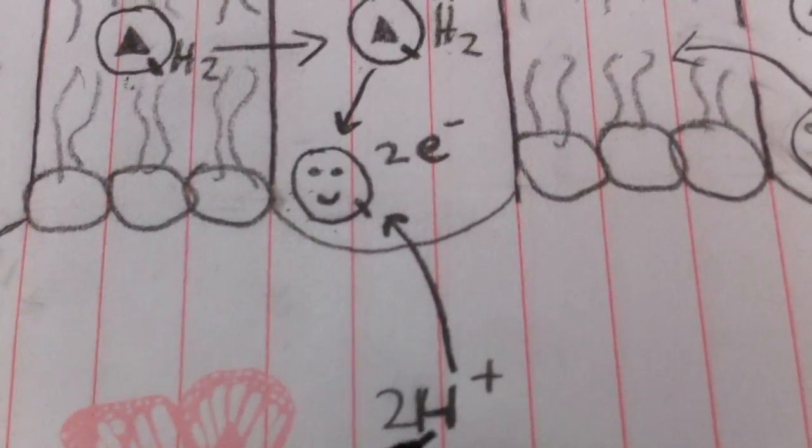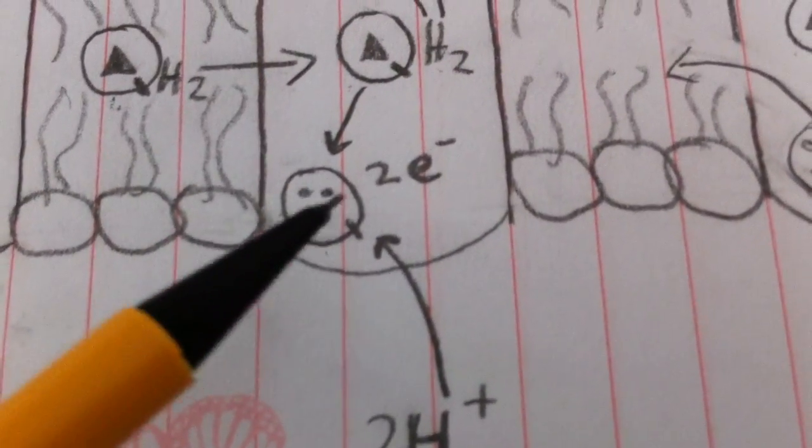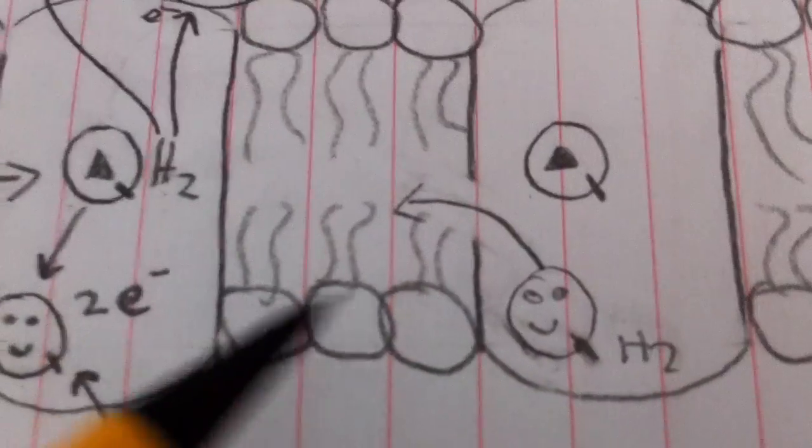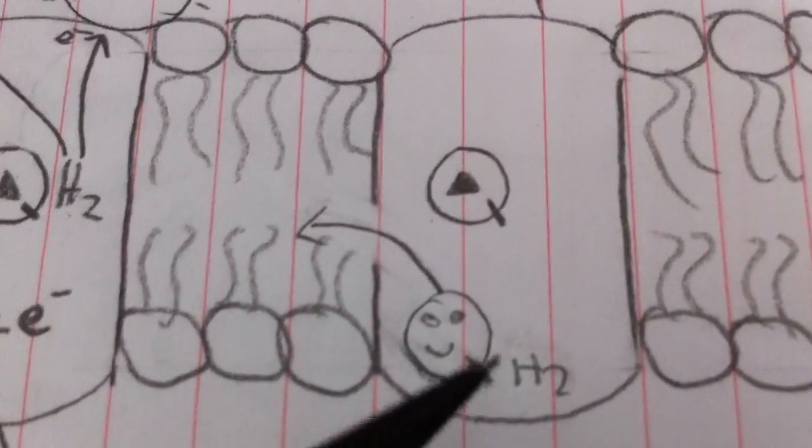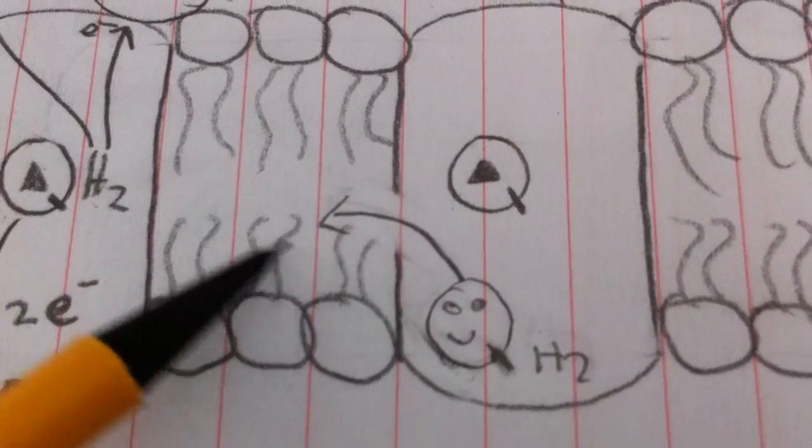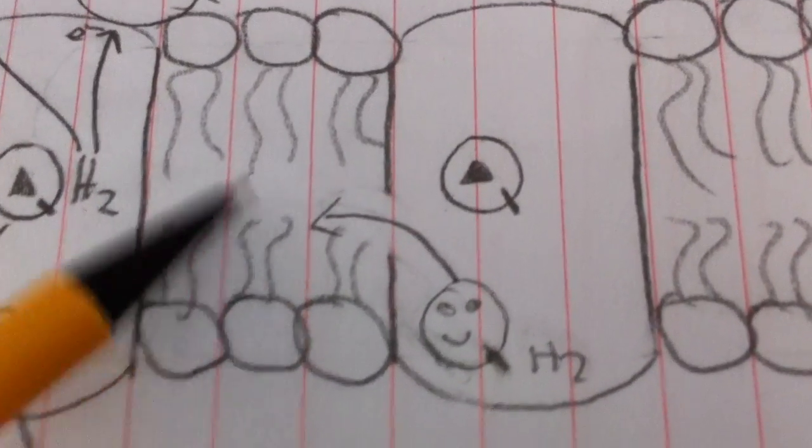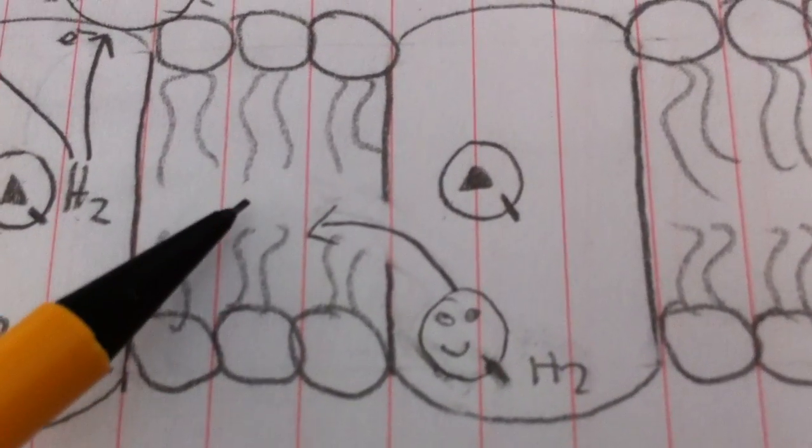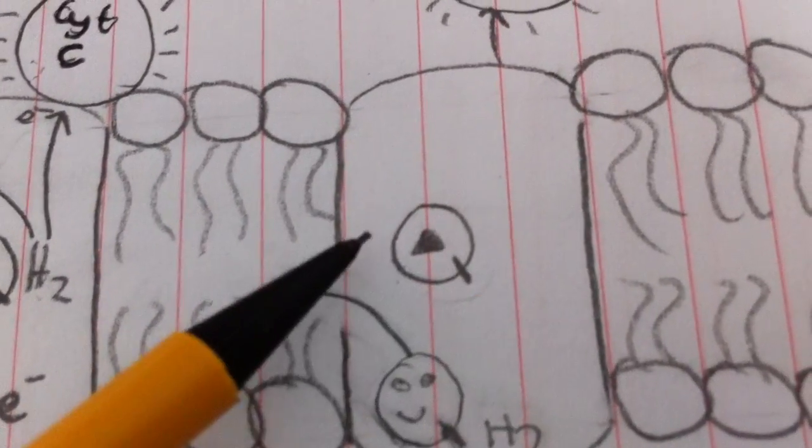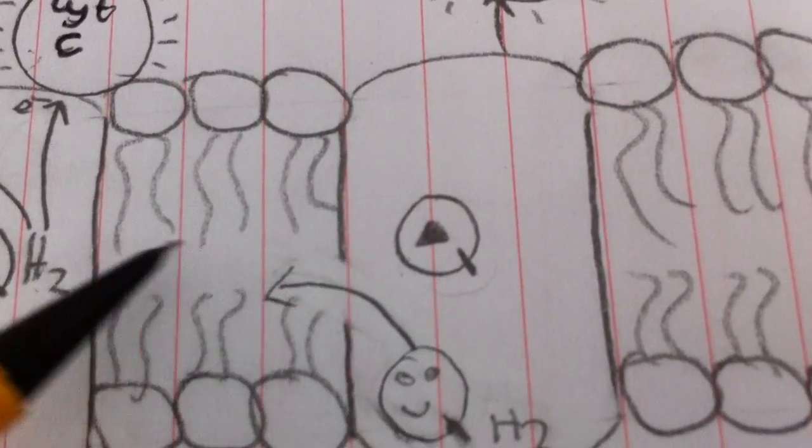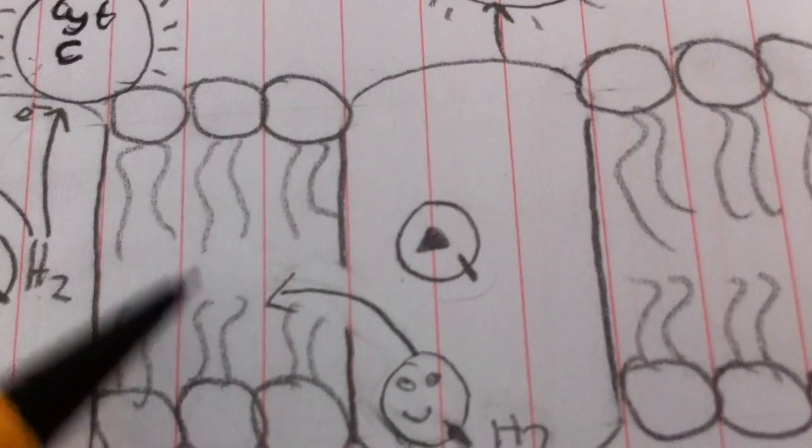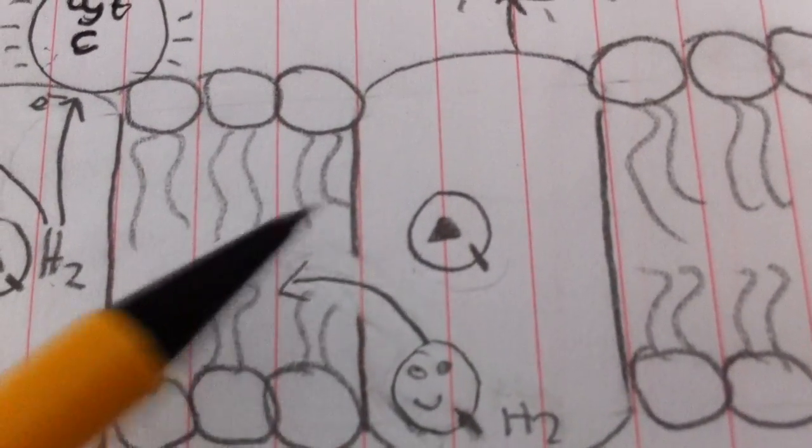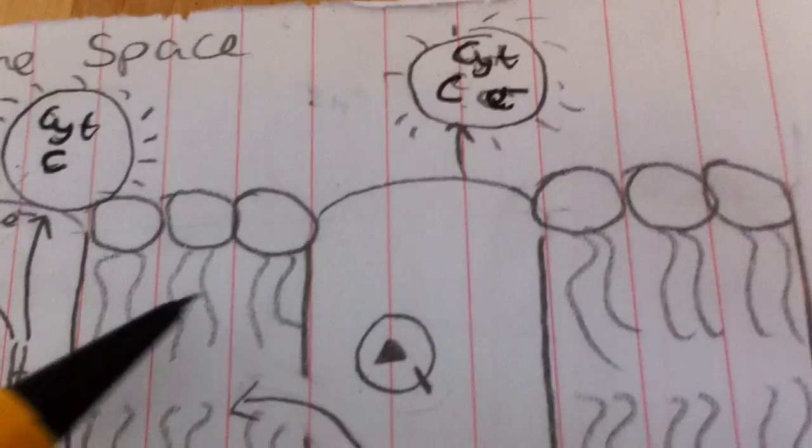Now, this one takes 2 protons from the matrix to make itself fully reduced. So now that can go back into the cupule in the membrane. And this one's now fully oxidized, so that can either go back to collect more electrons, or it can join the cupule to come in to start the cycle again.